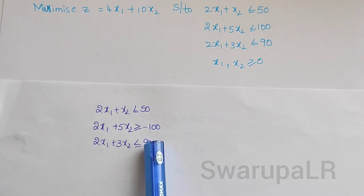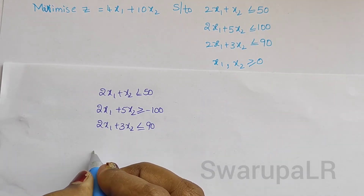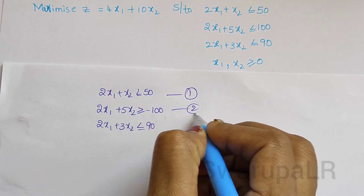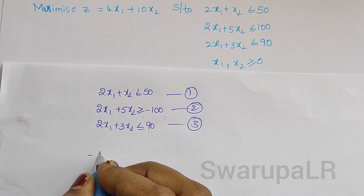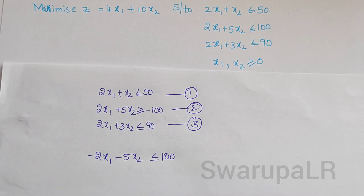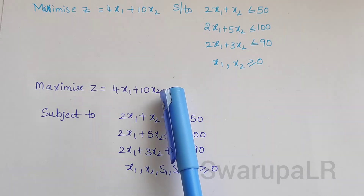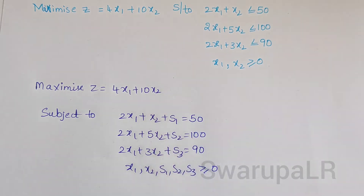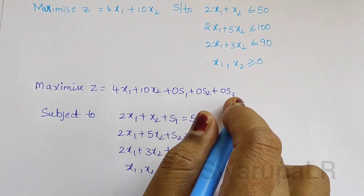Suppose the given constraints are in this form — the right hand side value should be positive. For that we have to change like this. This is the first equation, this is the second equation, this is the third equation. We have to change the second equation — we have to multiply with minus 1: minus 2x1 minus 5x2 is less than or equals to 100. We should add these three slack variables in the objective function with the value of 0: 4x1 plus 10x2 plus 0s1 plus 0s2 plus 0s3. This is the objective function.